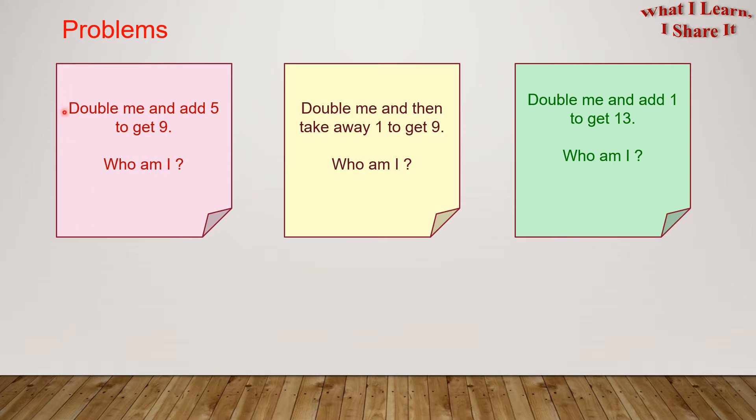Number 1: Double me and add 5 to get 9. Who am I? Number 2: Double me and then take away 1 to get 9. Who am I? And number 3: Double me and add 1 to get 13. Who am I? Do you want to try it yourself?